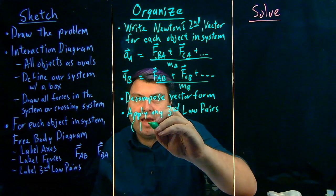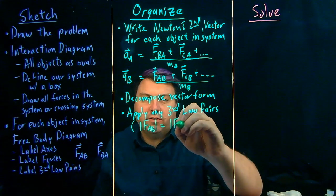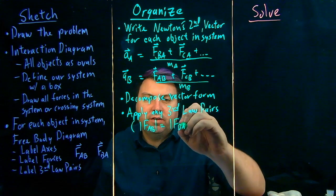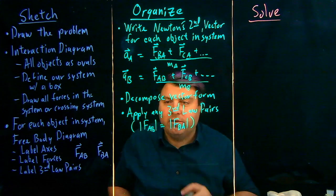For example, we have the magnitude of FAB is equal to the magnitude of FBA. And so then we can set these two equal to each other.